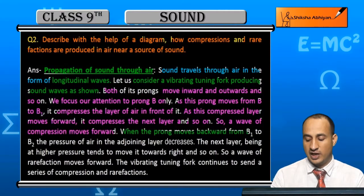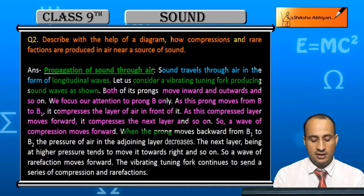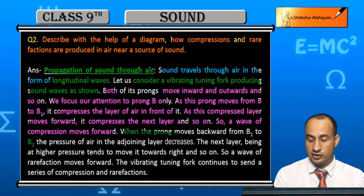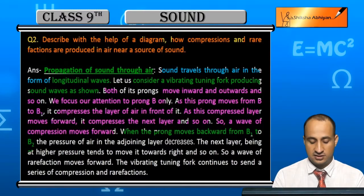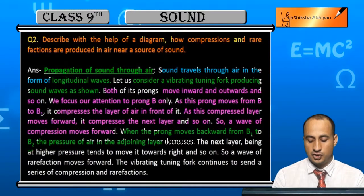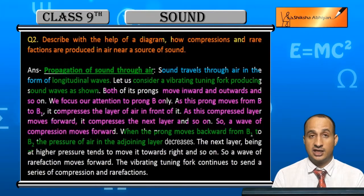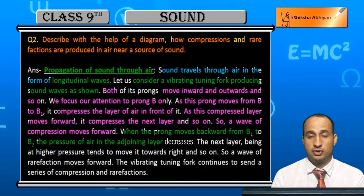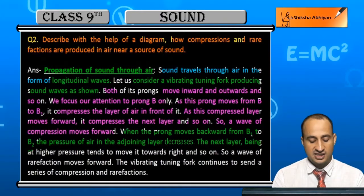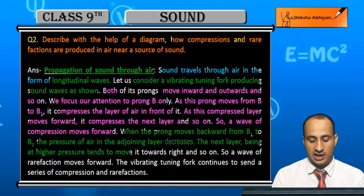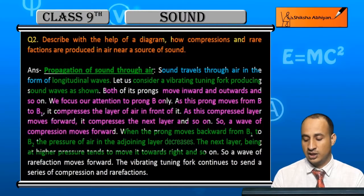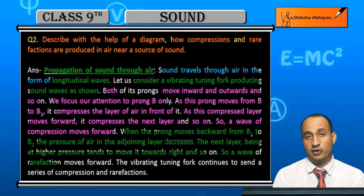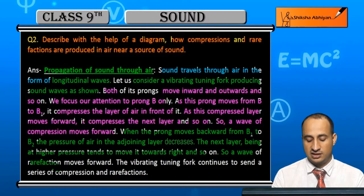And when the prong moves backward from B1 to B2, the pressure of the adjoining air layer decreases, and higher pressure in the next layer decreases as well, and so on. This way a wave of rarefaction moves forward.